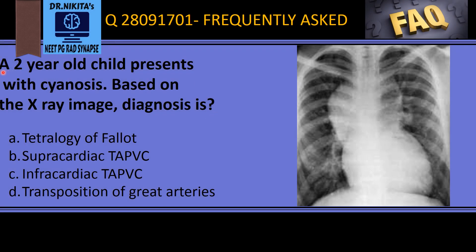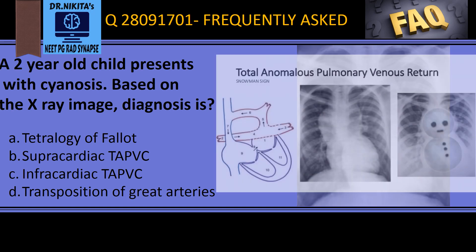The question is about a two-year-old child who presents with cyanosis, and based on the x-ray image we are supposed to identify the congenital heart disease. First, let us analyze the shape of the heart. The heart in this x-ray image looks like a figure of eight, or a snowman's heart.